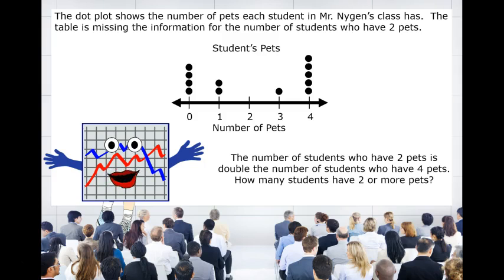Since 5 students have 4 pets, the number that have 2 would be 5 times 2, which equals 10. That means 10 students have 2 pets. Next,